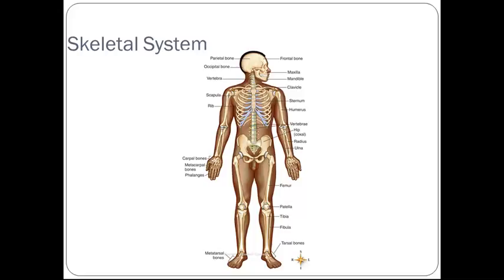The skeletal system, as you can see here, we have some of the bones named in the skeletal system on this picture. However, not all of them are named. There are 206 bones in total. The ligaments help hold bones together to form a joint.